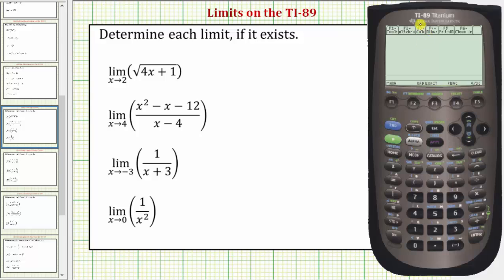So looking at this first limit, we have the limit as x approaches two of the square root of the quantity four x plus one. So we'll press F3, and then select option three by pressing three or arrowing down and pressing enter when three is highlighted. I'm going to go ahead and just press three.